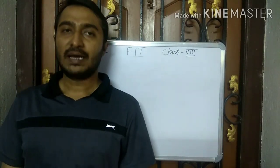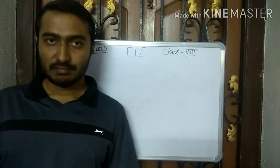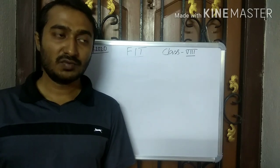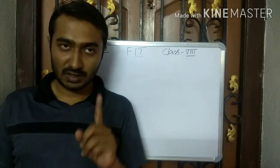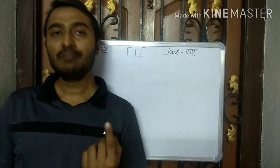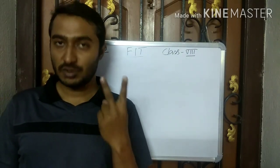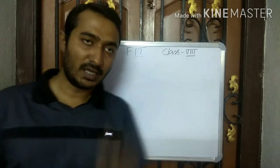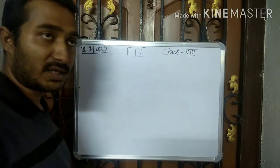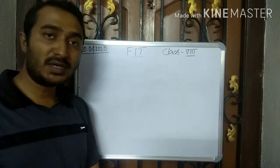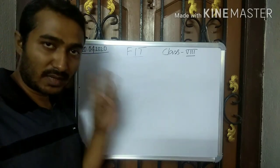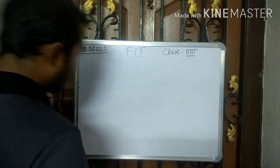Now we are going to discuss about the various binary operators. As unary means 1, it was working on a single variable. Binary means 2, so it will work on 2 variables. How many binary operators are there? There are basically 3 types of binary operators.